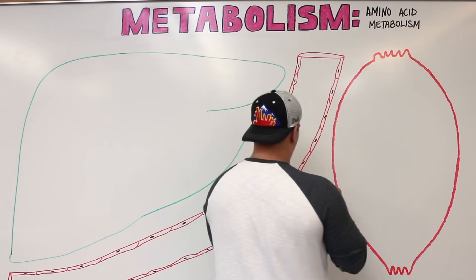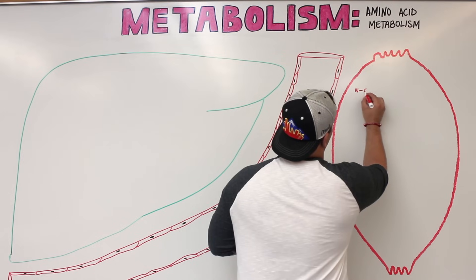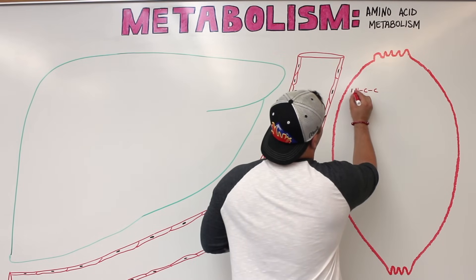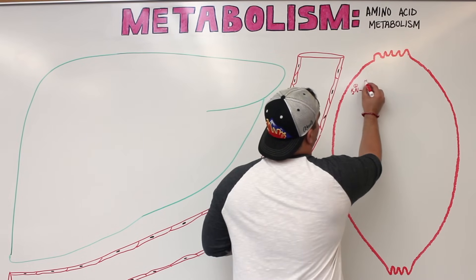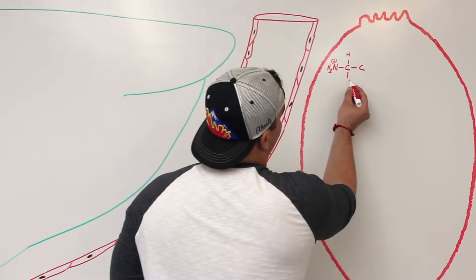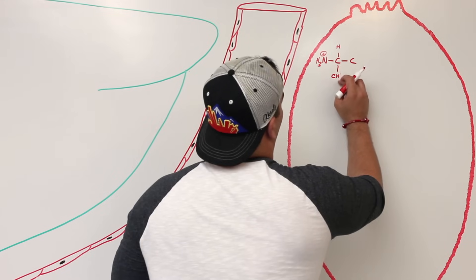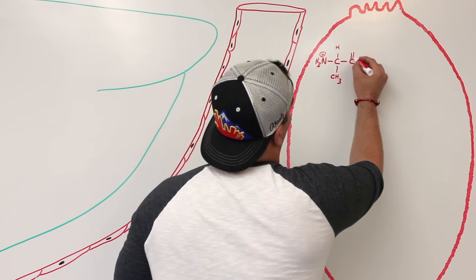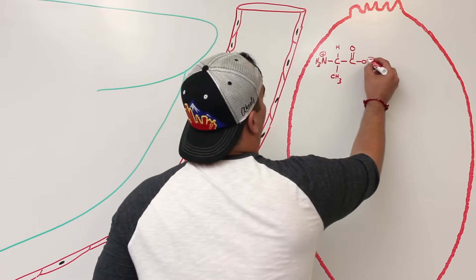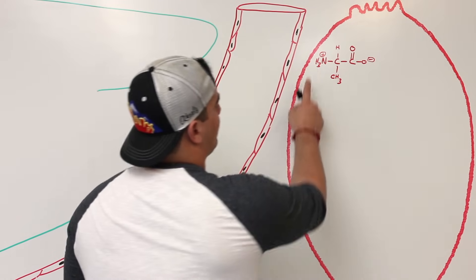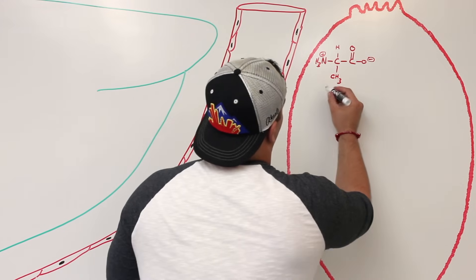Let's take alanine as a specific example. An amino acid always has what's called an NCC. On one end it has an NH3 group with a plus charge, then it has an alpha hydrogen, and for alanine it has a methyl group. It also has a carboxylate end. This is the zwitterion form of alanine — it has a plus and negative charge but the overall charge is neutral.